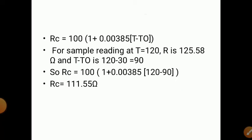The formula for calculated RC is: R_C = 100 × (1 + 0.00385 × (T − T₀)), where 0.00385 is the temperature coefficient of platinum wire. For a sample reading at T = 120°C with room temperature T₀ = 30°C: T − T₀ = 90, giving R_C = 111.55 ohms. The same resistance should be obtained experimentally.